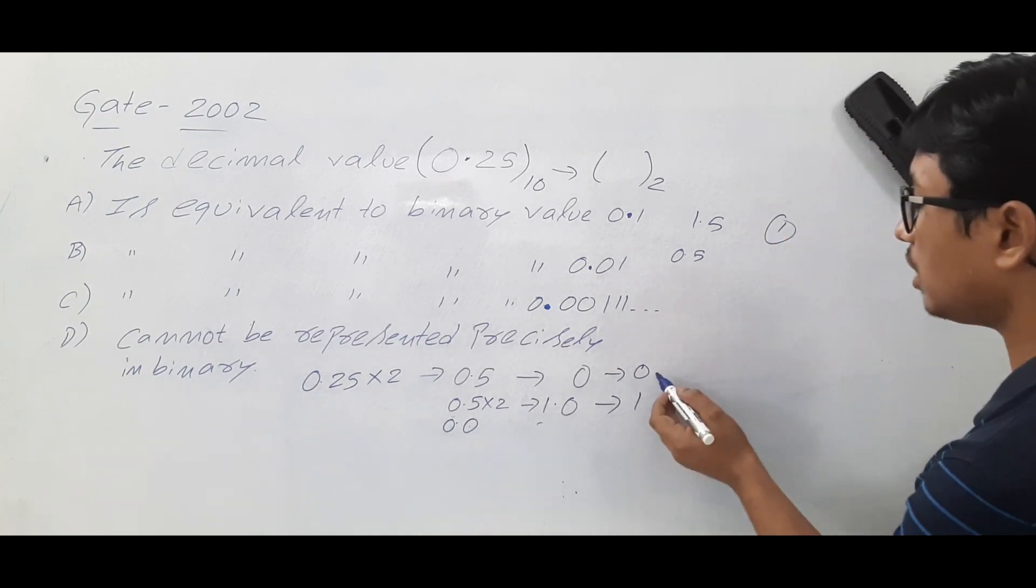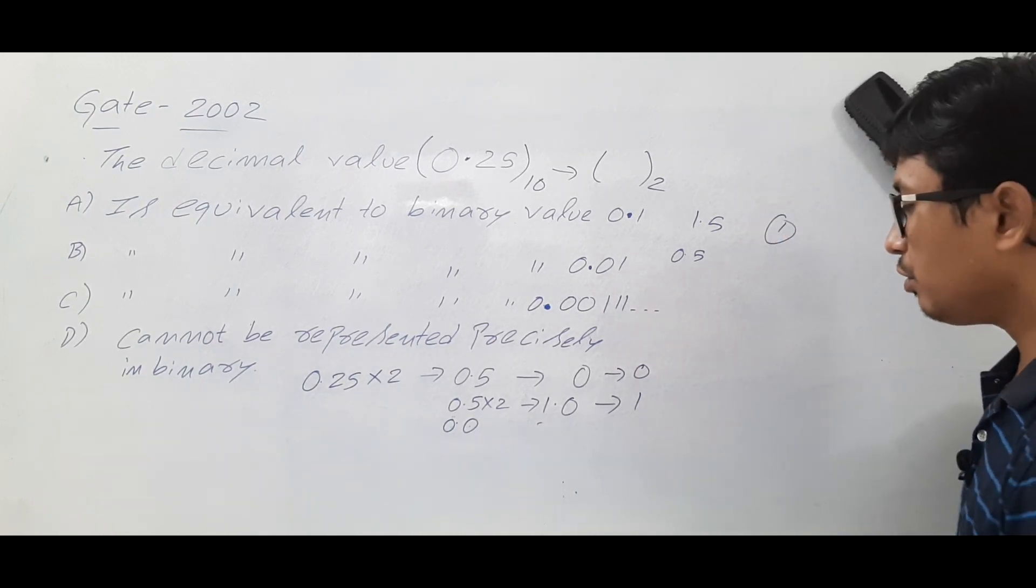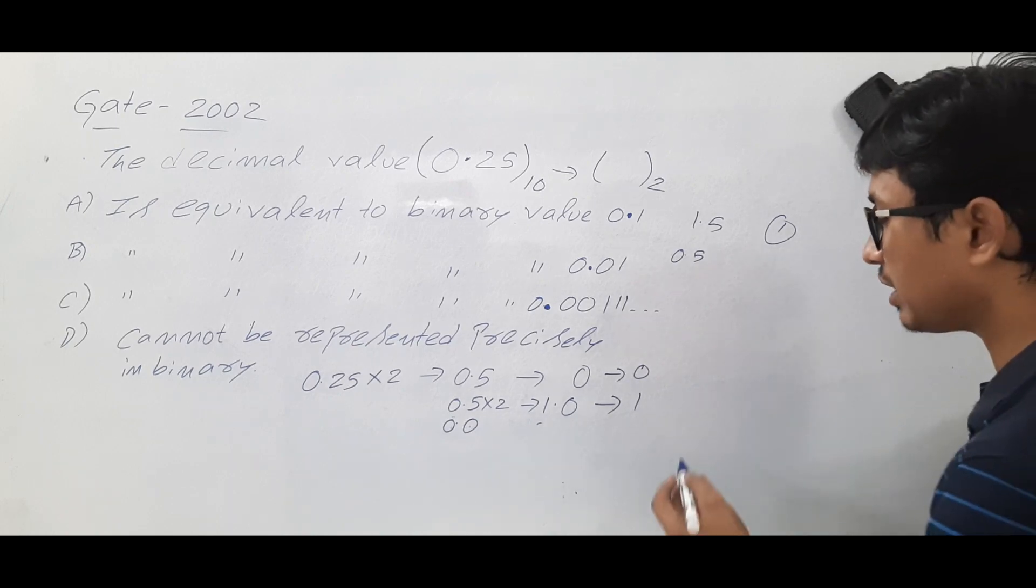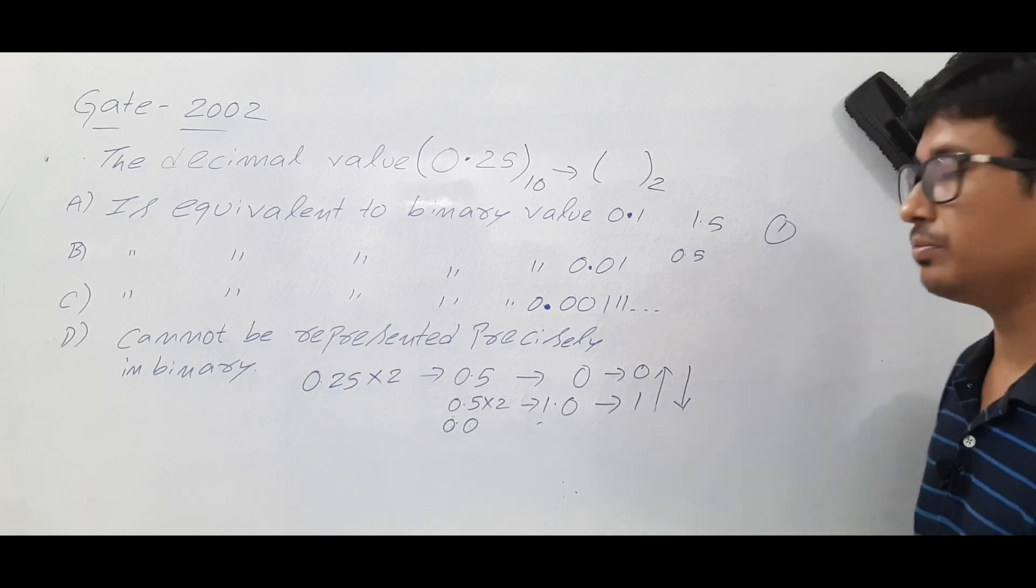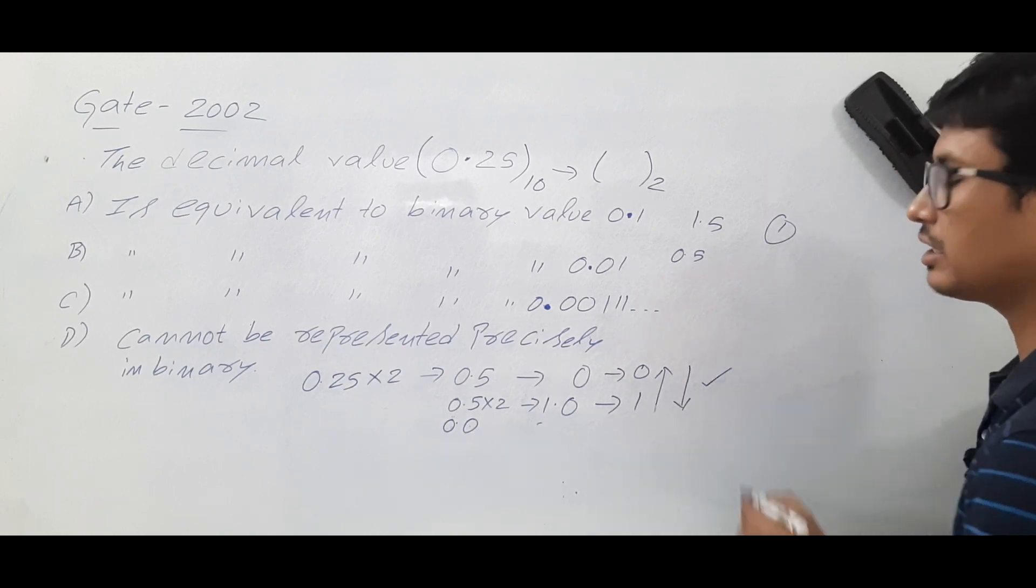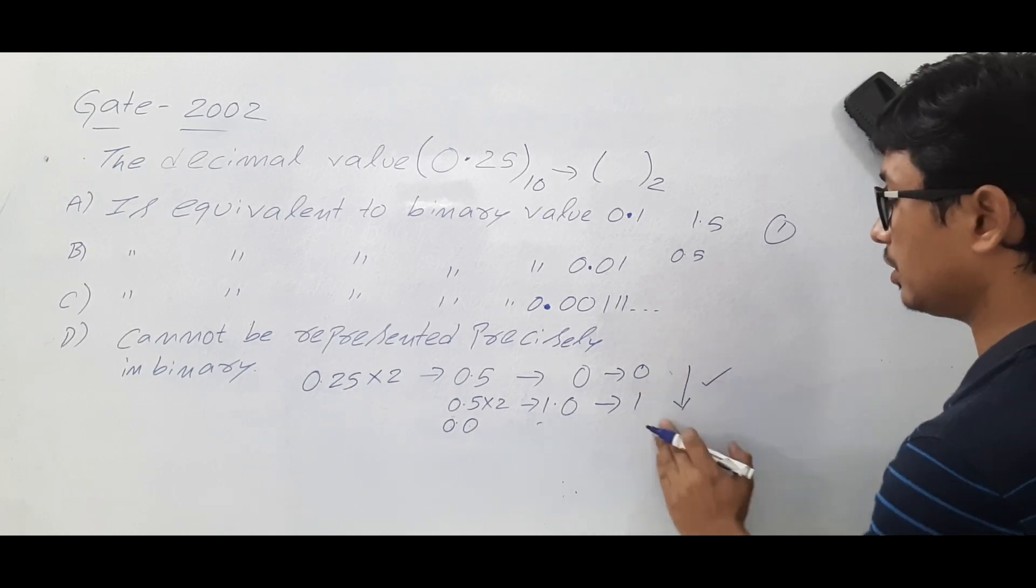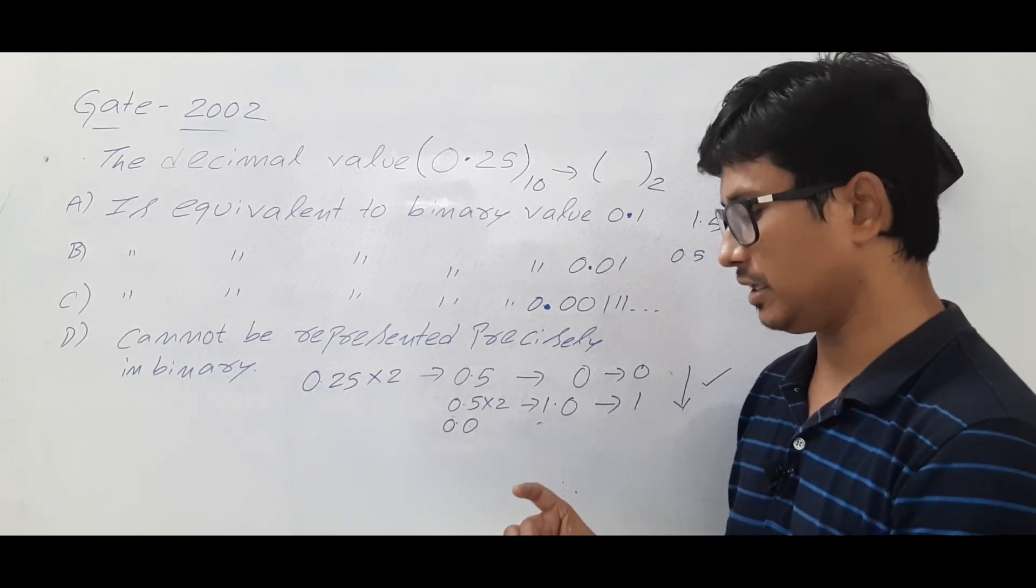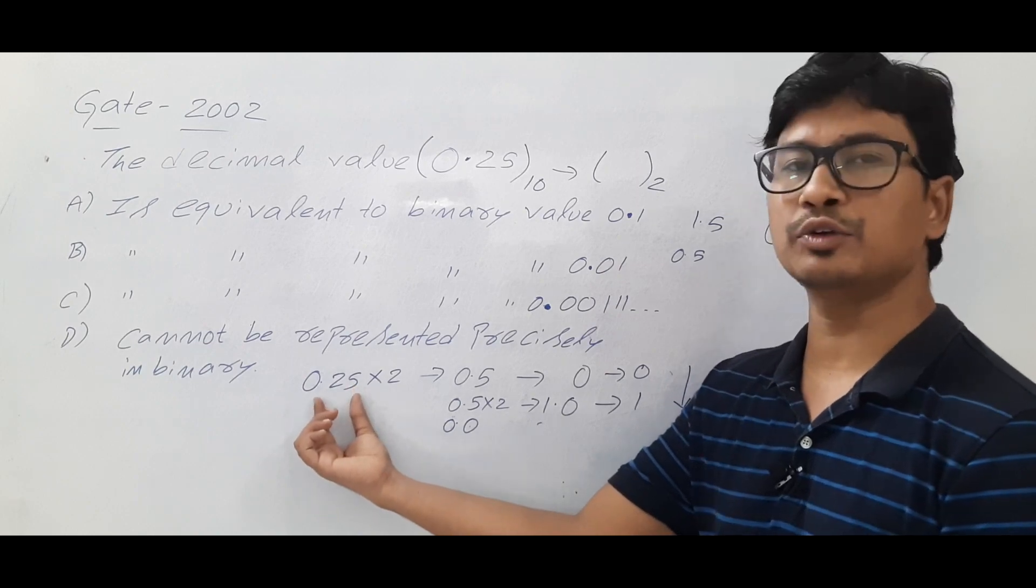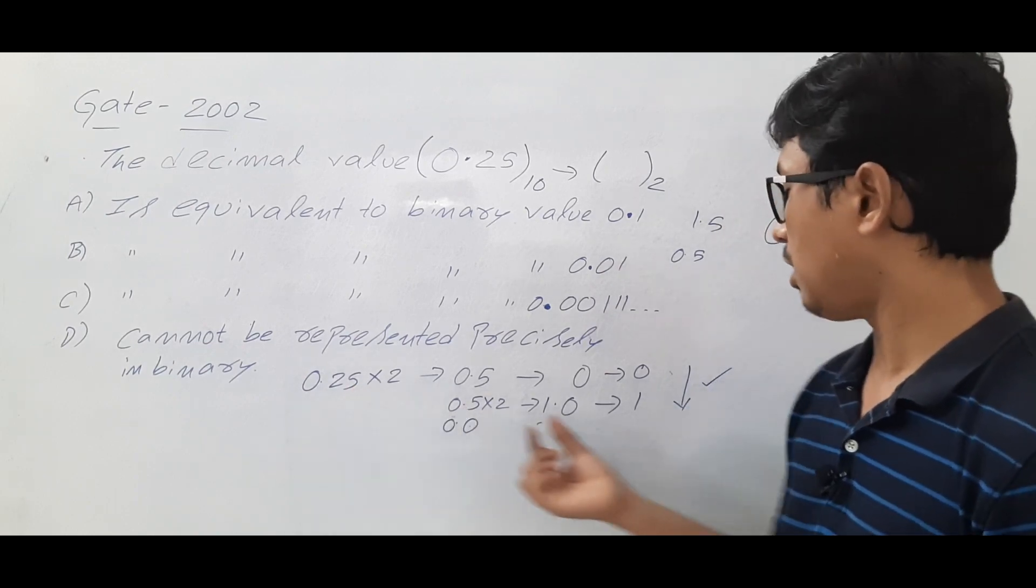So you got the 0.1. Now a lot of people will have doubt whether I have to take from bottom to top or top to bottom. You should always consider top to bottom for this conversion from a decimal to binary, especially 0.25 or anything. You have to take from top to bottom.